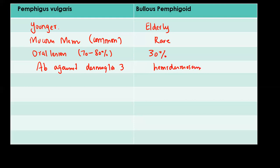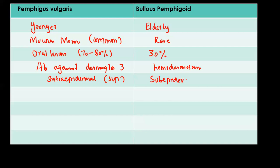The lesions in patients with Pemphigus Vulgaris are intraepidermal and they are more superficial lesions, whereas the lesions in patients with Bullous Pemphigoid are sub-epidermal and they are deeper lesions.